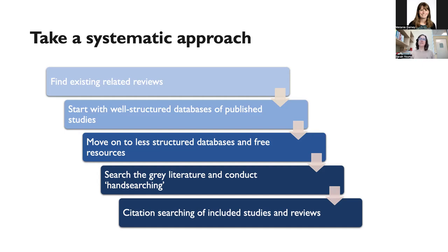Then we move on to less structured databases or free resources like Google Scholar, maybe certain organizational websites that might contain relevant reports — this would be the gray literature. We also conduct hand searching, looking at tables of contents of relevant journals that might not be fully indexed in the databases. As a final step, we do citation tracing — taking included studies, looking at their references, and even looking at who has cited those studies using a tool like Google Scholar — to ensure we're capturing all research we might have missed.